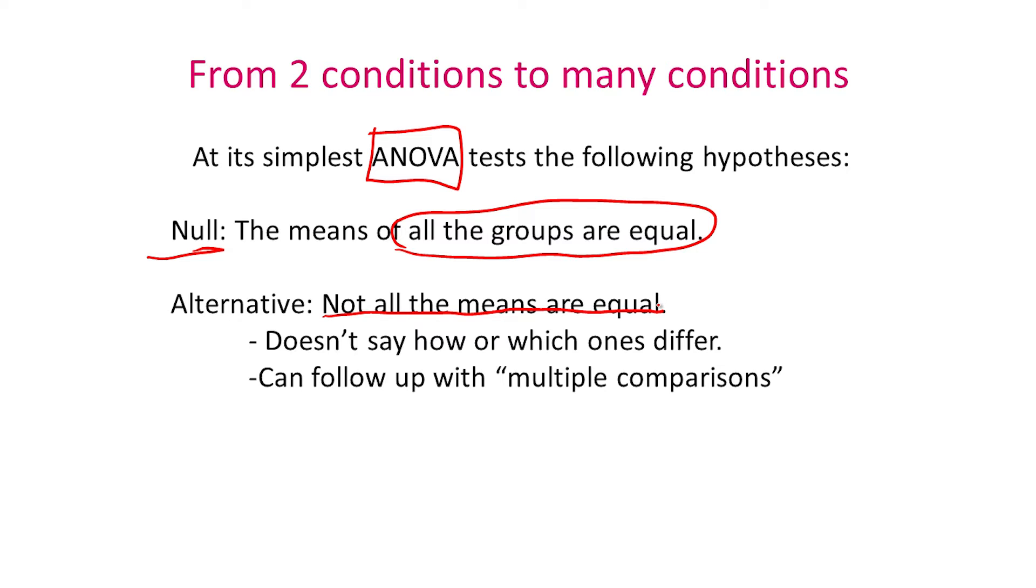Now, the ANOVA produces a test statistic which allows us to rule out the null. But if the null is ruled out, it doesn't really say how they are different or which ones are different. To overcome that, we need to follow up with something called multiple comparisons or, as some researchers would call them, contrast tests. But if you look at the overall model, simply rejecting a null simply means that not all the means are equal, but we don't know exactly which ones and in what pattern. Now, let's look carefully as to what the basic idea behind an ANOVA is.